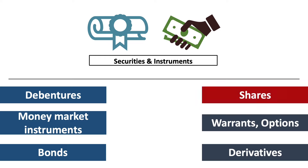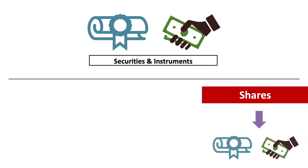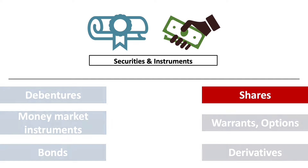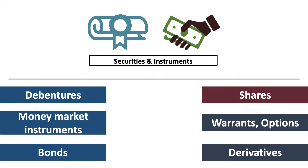For example, when a client buys shares in a company, he or she receives a confirmation in the form of a share certificate, which confirms their rights as an owner or shareholder. Unlike buying a house or a car — where you get something physically tangible — when you buy shares, debentures or other securities and instruments, you receive a confirmation of your rights as an owner. The potential gains on these products are dividends for shares and interest for debentures and similar interest-earning products.